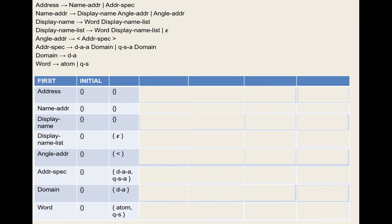Domain appears in rule six in two places, both as the rightmost element of their respective rules. Each time we add the follow set of address-specification, which is {$, >}. So follow set of domain = {$, >}.